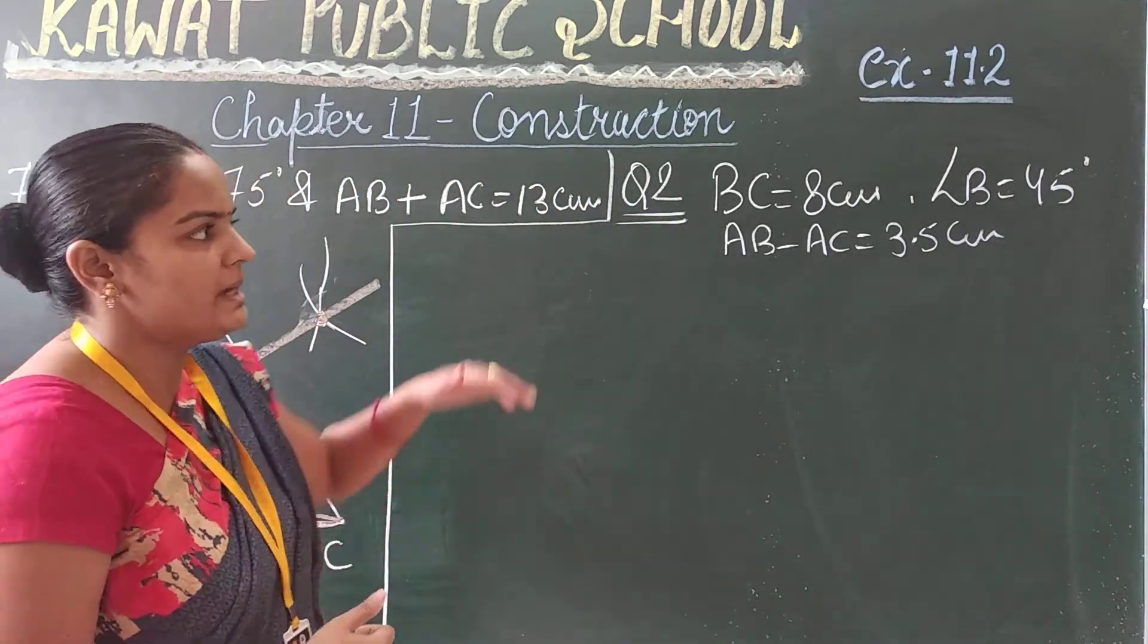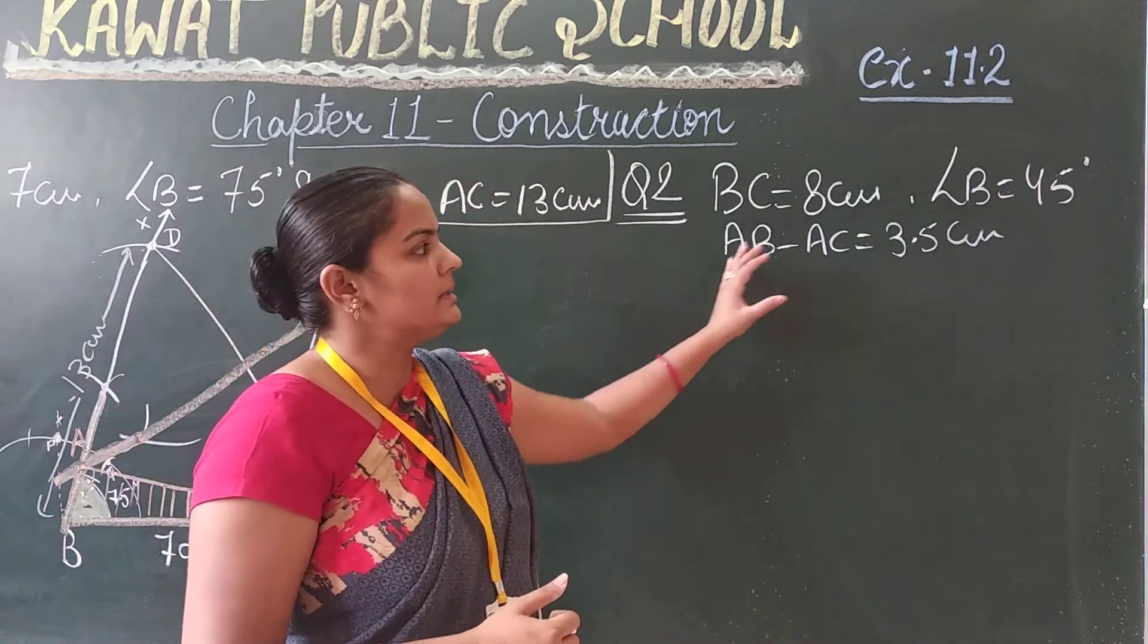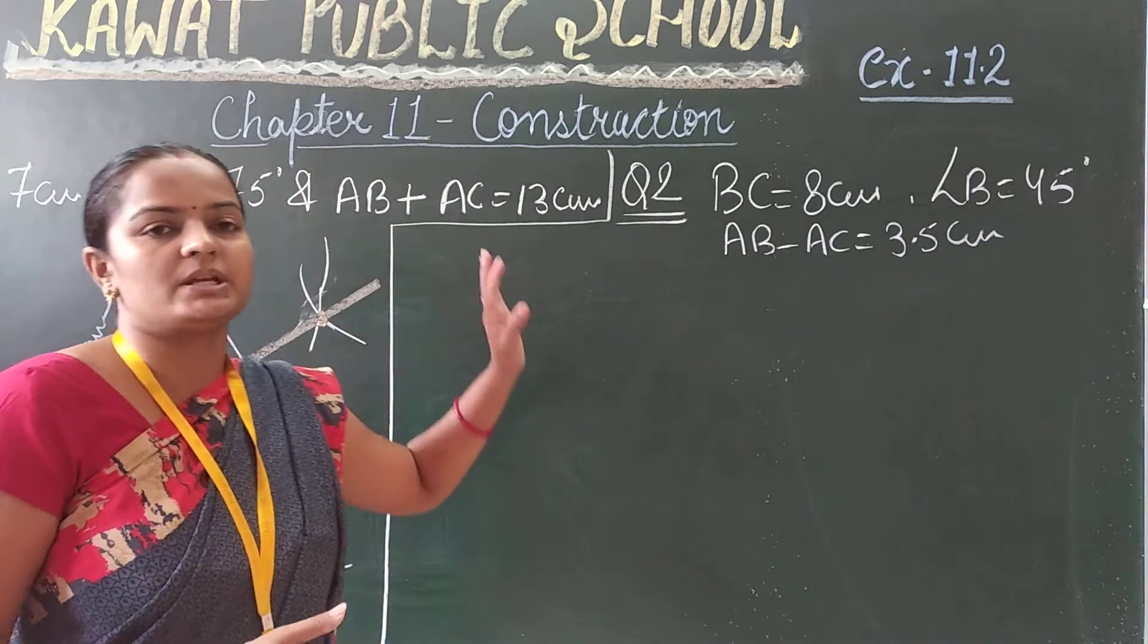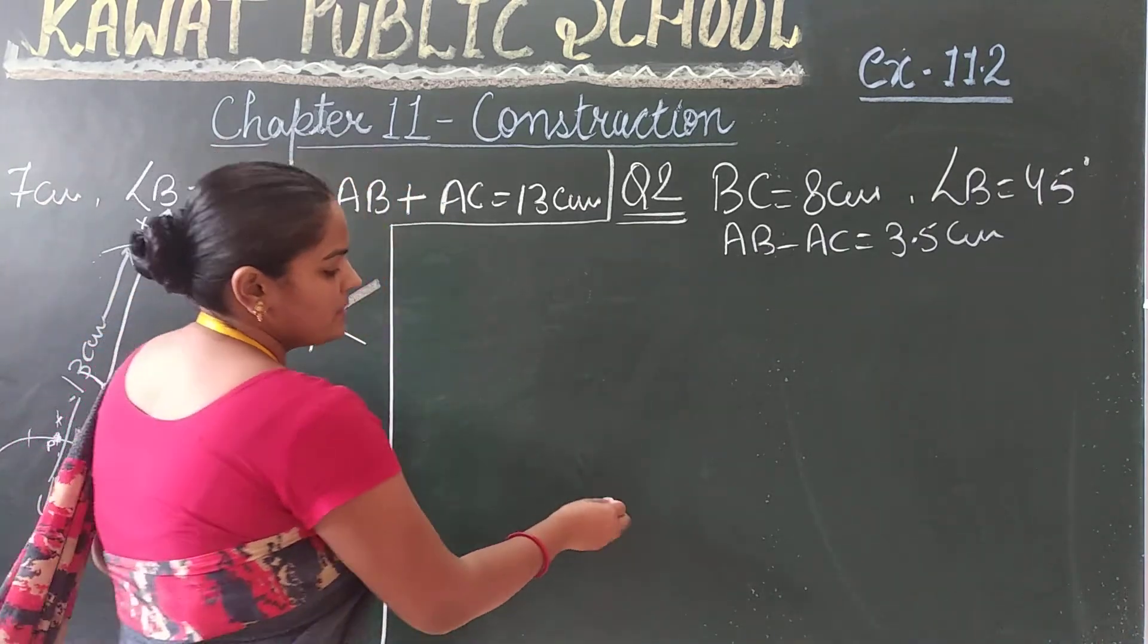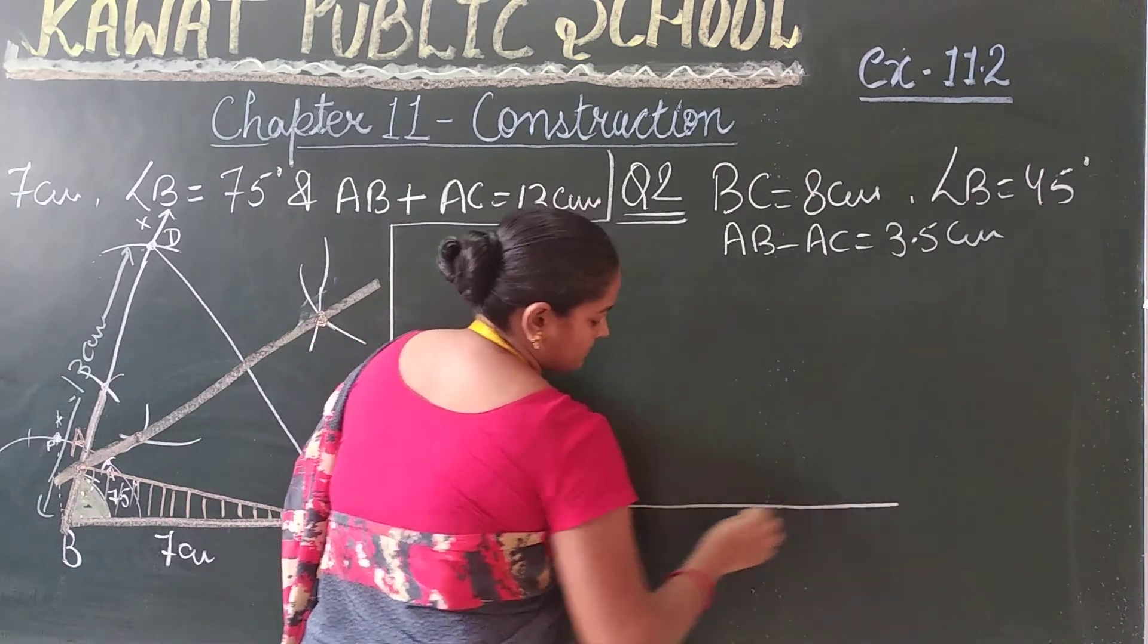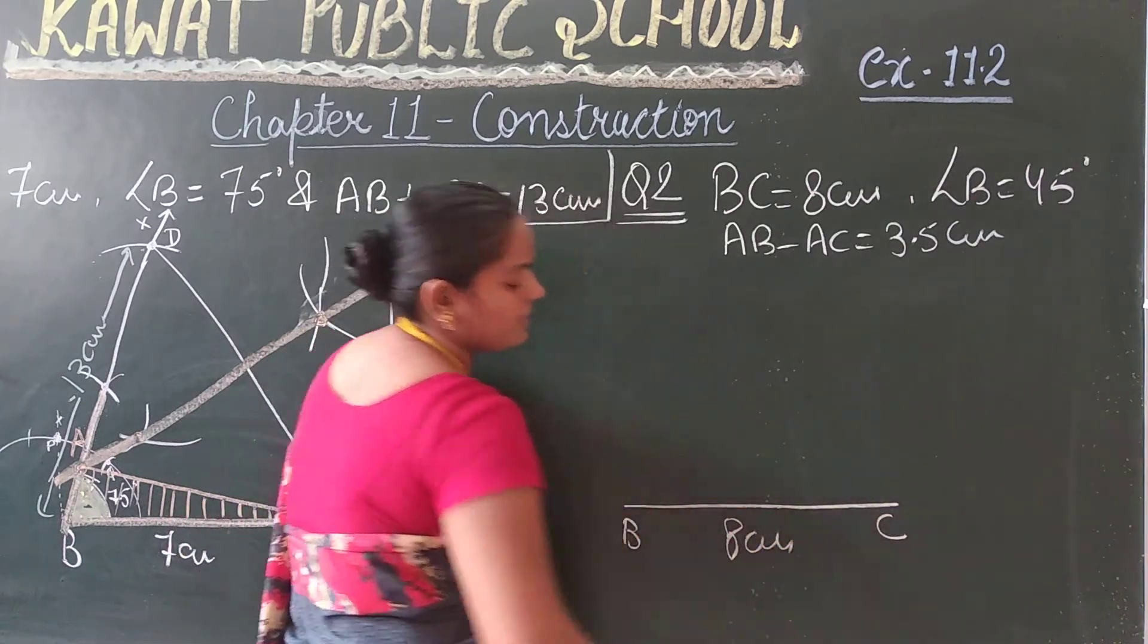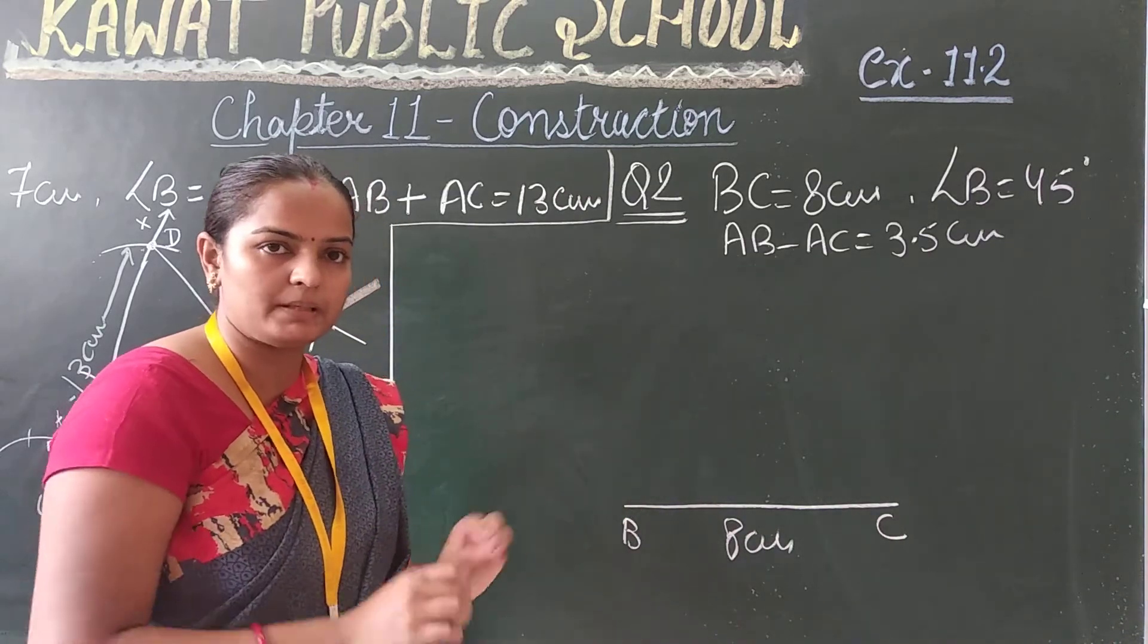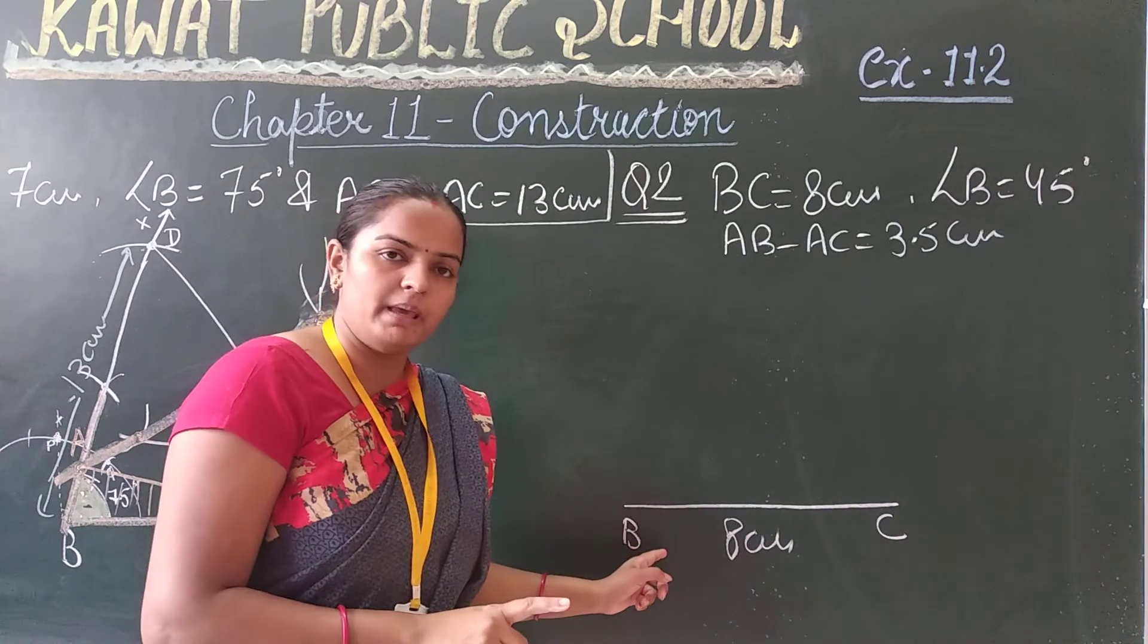Now what do you have to do? Again, first step you have to draw the base. First draw the base, then base angle. BC is 8 centimeters. Base line draw.